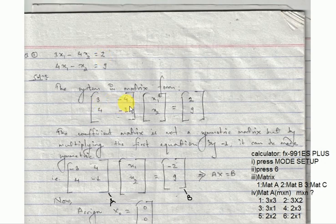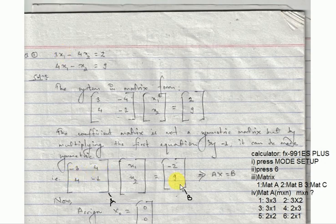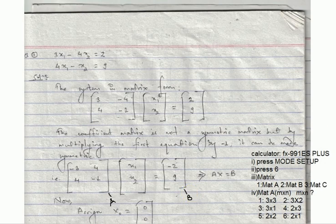Using the method of multiplying by the transpose, the transformed equation becomes: [-3, 4; 4, -1] times [x1, x2] equals [-2, 9]. This equation is of the form Lx = b. So Lx equals the matrix A and Lx equals b. I will now go to the calculator.